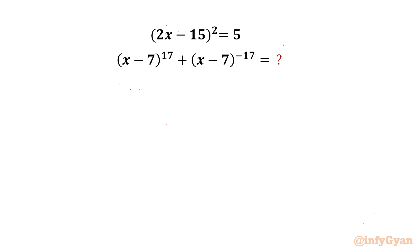Hello my dear friends, welcome back to Infigyan. Today in this video we are going to take up another very interesting and challenging question from algebra. The given equation is (2x - 15)² = 5, and we have to evaluate (x - 7)^17 + (x - 7)^(-17).